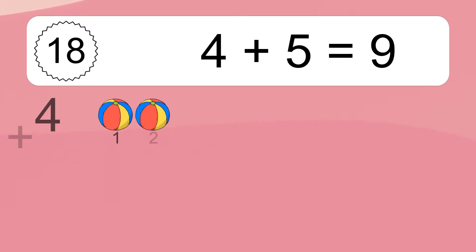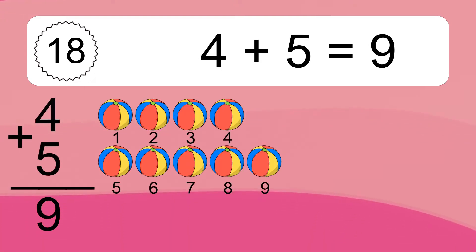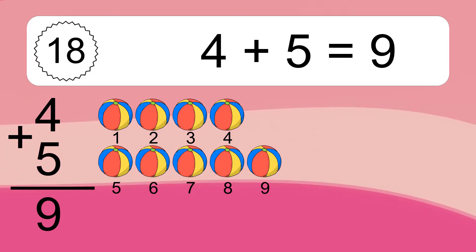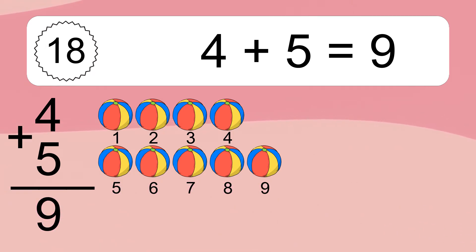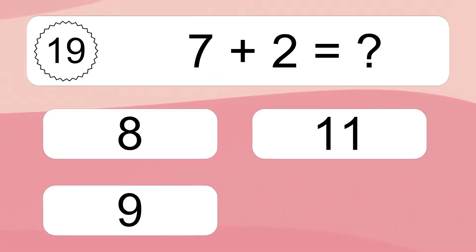4 plus 5 equals 9. Let's count it: 1, 2, 3, 4, 5, 6, 7, 8, 9. 7 plus 2 equals what?